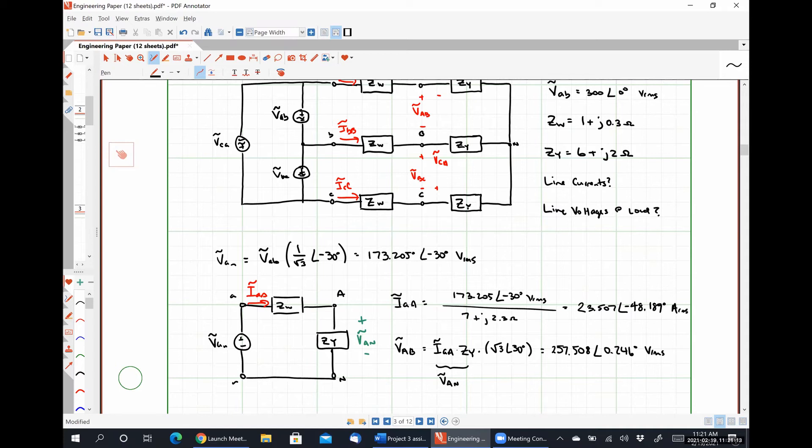Okay. So any questions, comments, concerns about this problem? All right, so I have posted two homework assignments on Moodle. The first of which is due next Wednesday. It is five problems, all of which the source is Y connected. And then the load is either Y connected or Delta connected. And then the very last problem has both a Y and Delta connected load. And the second homework set, all the sources are Delta connected. And then the loads are either Y or Delta or some combination thereof.